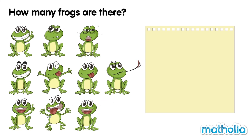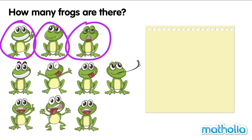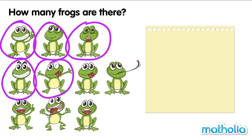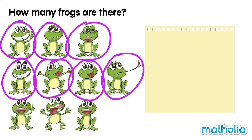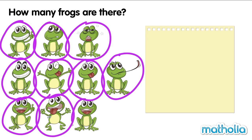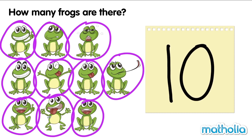How many frogs are there? One. Two. Three. Four. Five. Six. Seven. Eight. Nine. Ten. There are ten frogs. Ten.